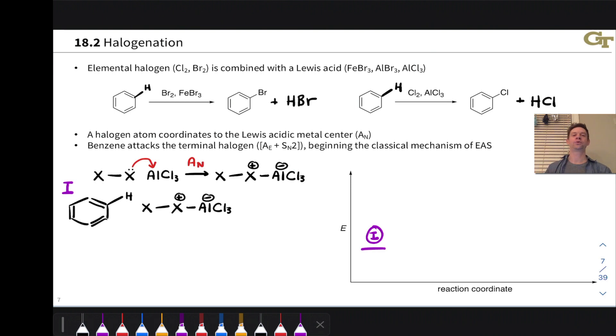Now we're in the sort of canonical standard mechanism of electrophilic aromatic substitution. The aromatic ring via its pi electrons coordinates to that hanging X atom. At the same time, the X plus is kicked off as a leaving group. It's a fantastic leaving group, that positive charge on a halogen atom.